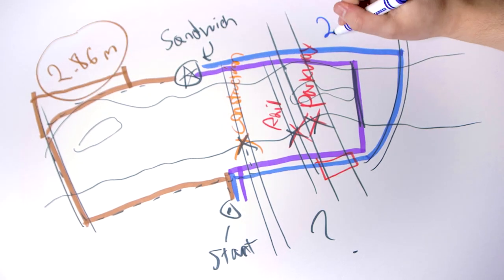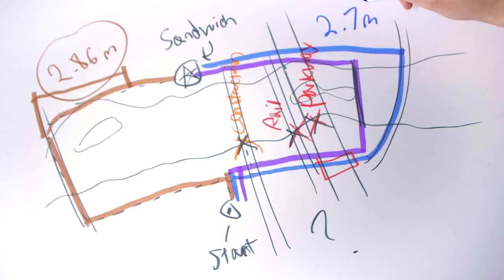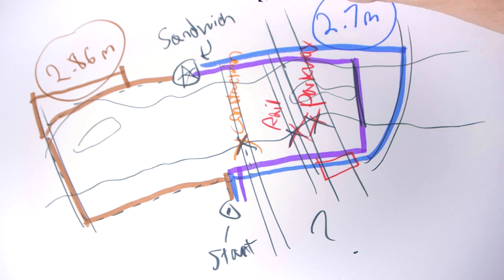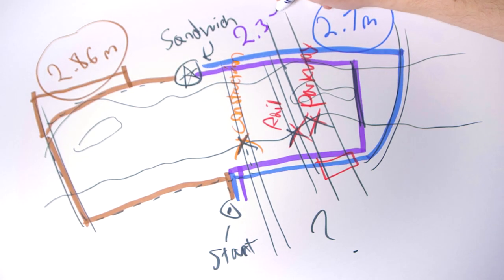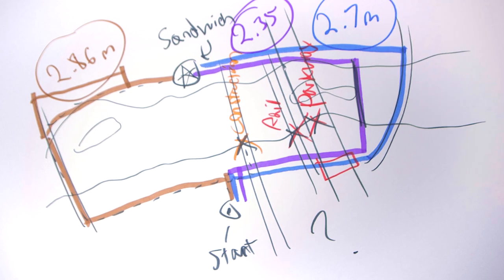Path A was a total of 2.86 miles there and back, which is about what I expected. Path B was surprisingly shorter at 2.7 miles, and Path C was unsurprisingly the shortest of them all, at 2.35 miles.